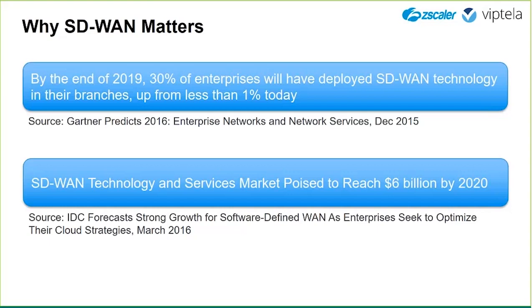In a nutshell, that's really what SD-WAN is driving towards. The transformation is around how do I architect my wide area so I can ride the cloud strategy and at the same time get plenty of bandwidth for really low cost. Industry analysts have endorsed this — about 30% of enterprises will have SD-WAN by 2019, and it's going to be a multi-billion dollar business. Before we get into the details of what SD-WAN is, what problem it's trying to solve, and how we're solving it, I'm sure many of you are wondering who Viptela is.